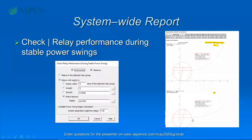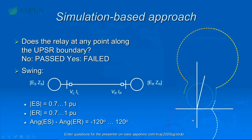If the event file was recorded when the remote line end is open, you need to check that checkbox. You also need to define the start location of the fault function and the maximum fault resistance. Currently we support seven algorithms — the first one, 'Auto', is defined by Aspen; all other six are IEEE-published algorithms. These algorithms take the recorded three-phase voltage and current values as input and generate a percentage value indicating the fault location on the transmission line.